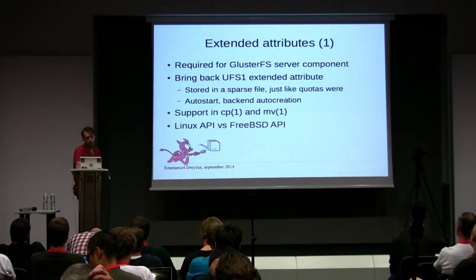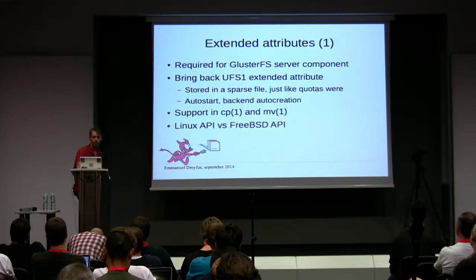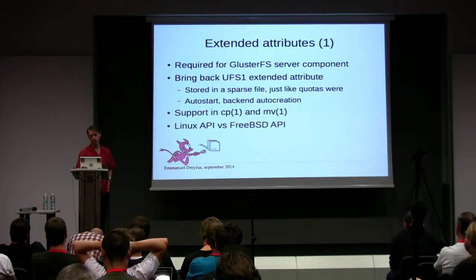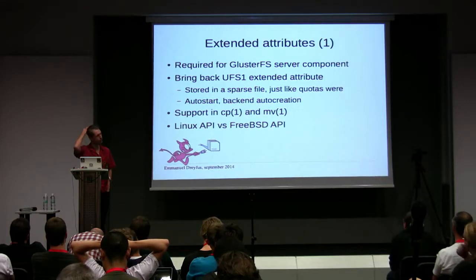Another problem specific to GlusterFS is that it makes heavy use of extended attributes on the server side, and NetBSD had no proper support for extended attributes. It had some support from UFS1 code but it was very broken and didn't build, so I had to make it work again. It used sparse files to store attributes with one file per attribute. I had to add code so the backend file is auto-created, so things work without a sysadmin creating a file every minute.